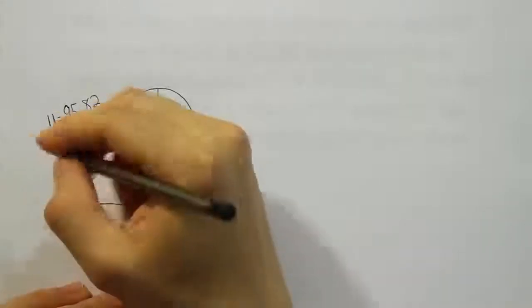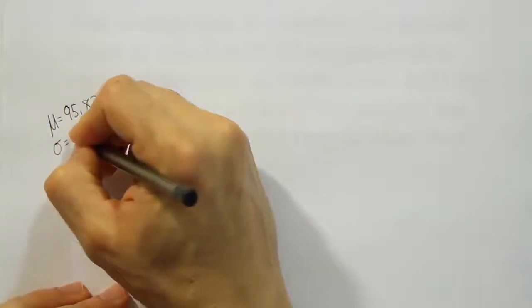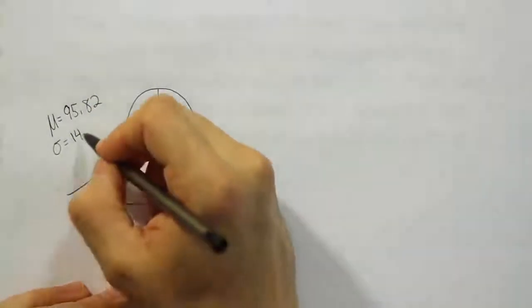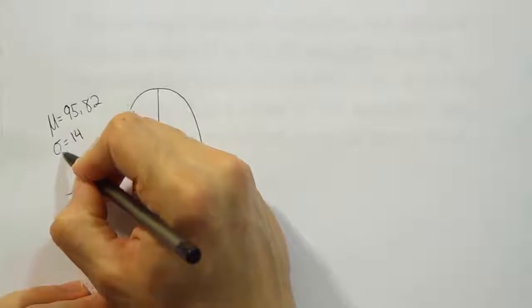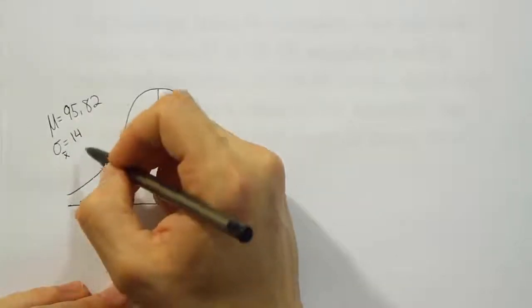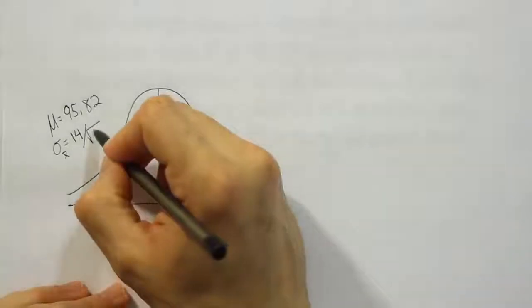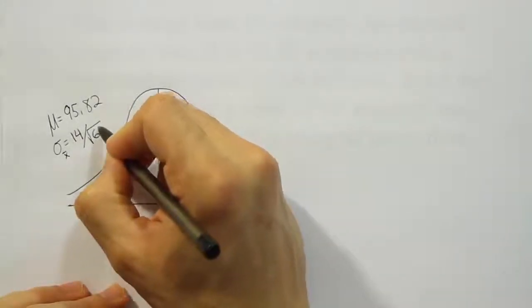Then they tell us the standard deviation normally is 14 minutes. But that's for an individual student. For the sample mean x bar, so sigma for x bar, that number is going to be a little different. We're going to have to divide it by the square root of our sample size. Our sample size was 60, we were dealing with groups of 60 students here.